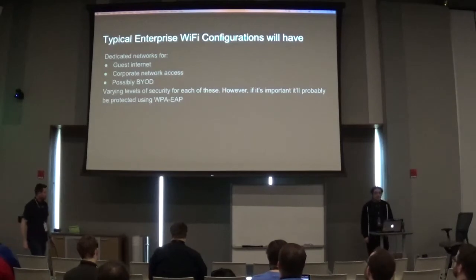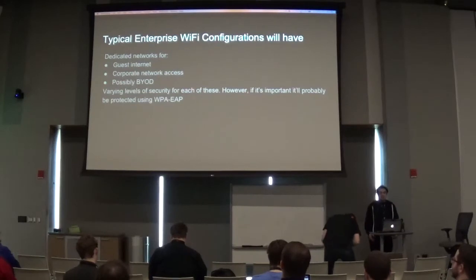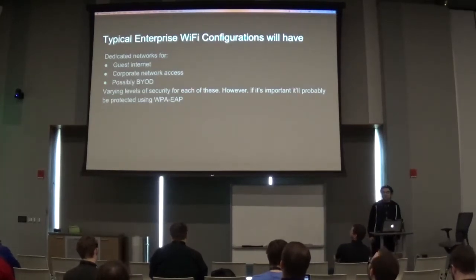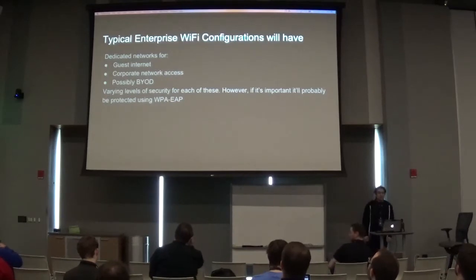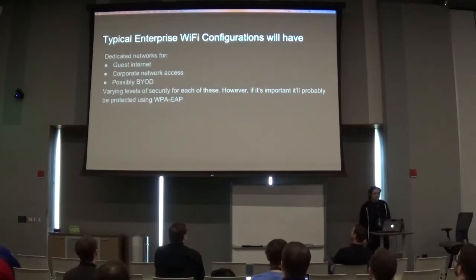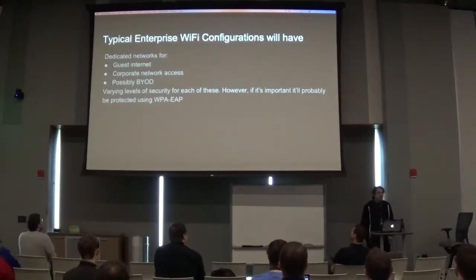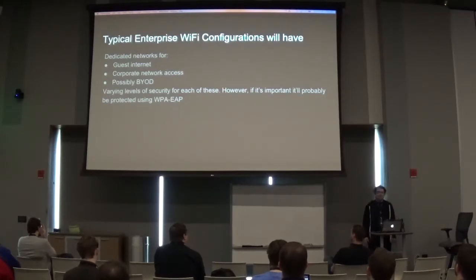You're going to have your corporate WiFi network, usually for access to internal resources. It's a lot more locked down because employees use it for day-to-day work. A well-set-up network will also have an IoT network to keep those devices isolated. There are varying levels of security for all of these, but the one we really care about is the corporate WiFi — if you get into it, you have the potential to move further into the network, access internal resources, people's laptops, and so on.